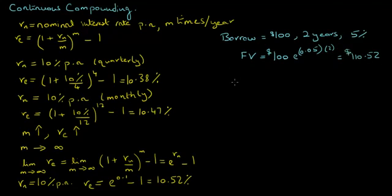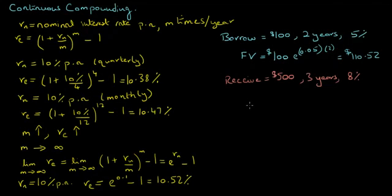Now let's take another example. Suppose you expect to receive $500 in three years, and the appropriate discount rate is 8% per annum with continuous compounding. What is the present value today of this $500 payment that you expect to receive in three years' time? The present value equals $500 discounted back at the rate of 8% over three years, and this equals $393.31.